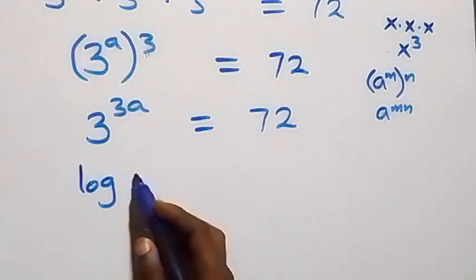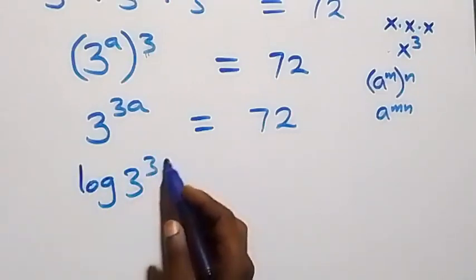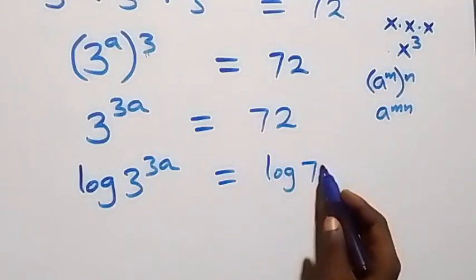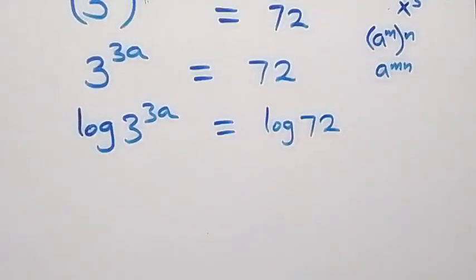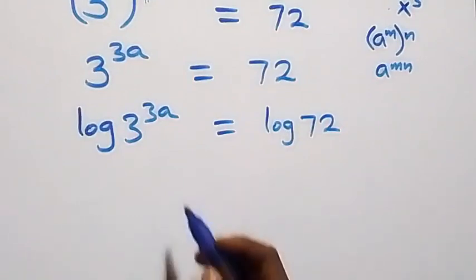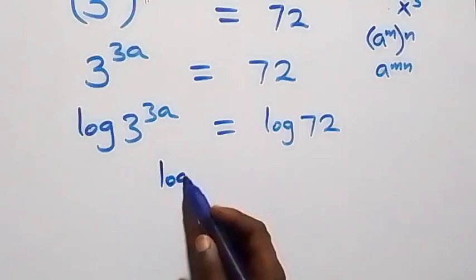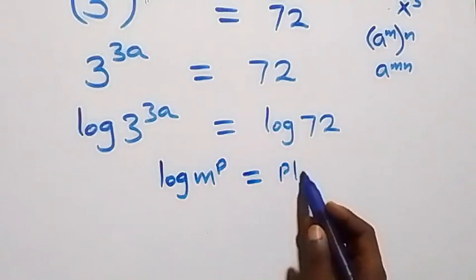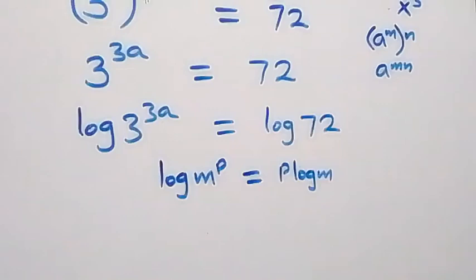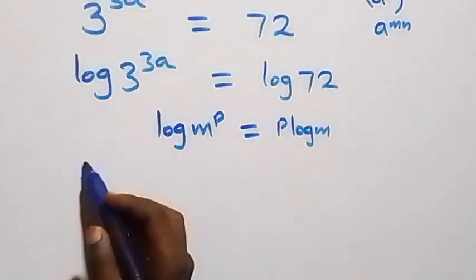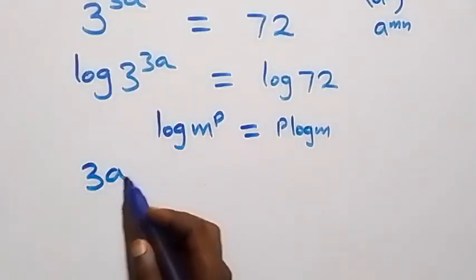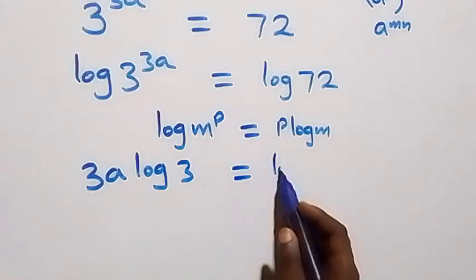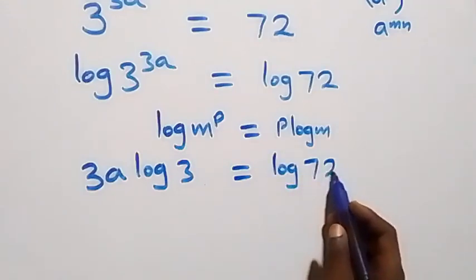Next step: we take the log on both sides. That is, we have log of three raised to power 3a equals log 72. Then we apply the power law of logarithm — when we have log m raised to power p, this is the same as p·log m — so this becomes 3a·log 3 equals log 72.